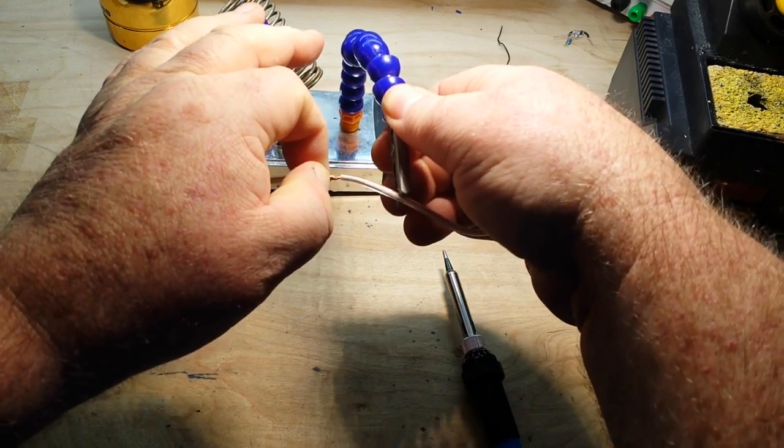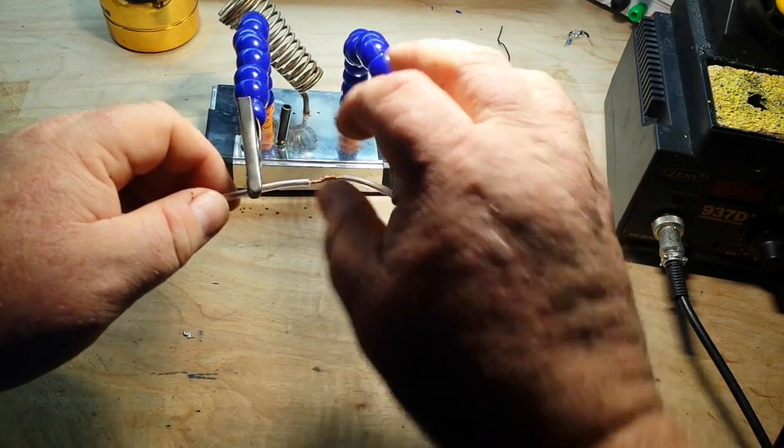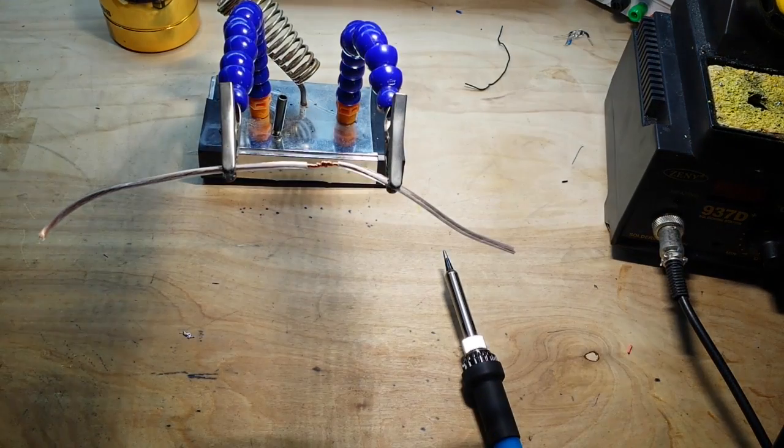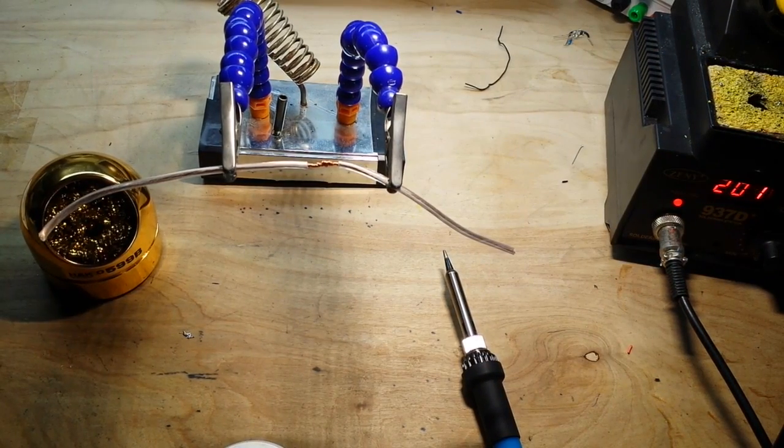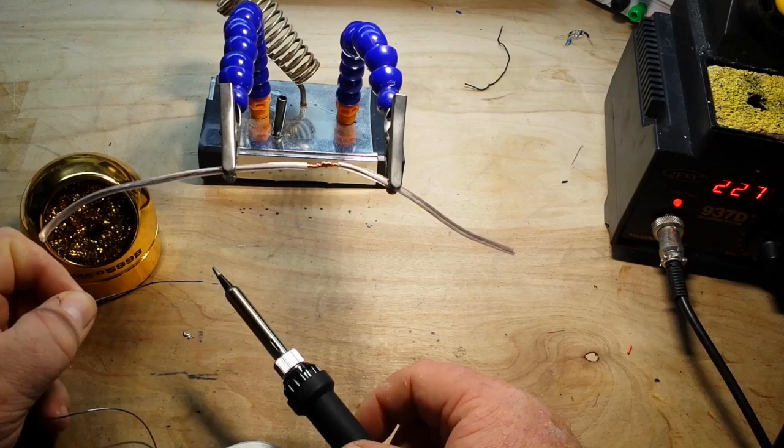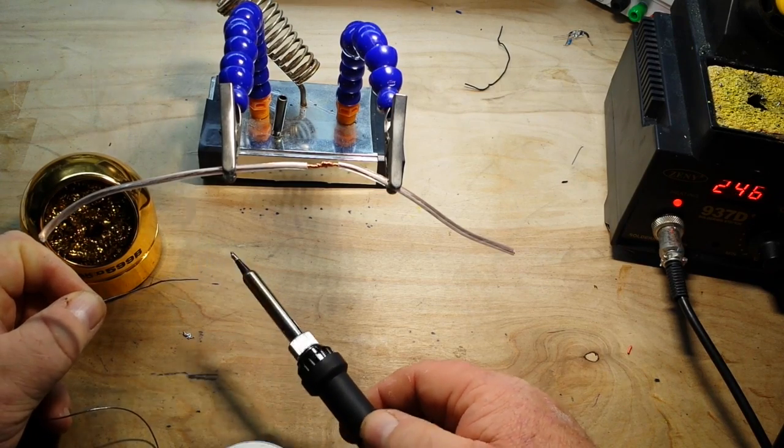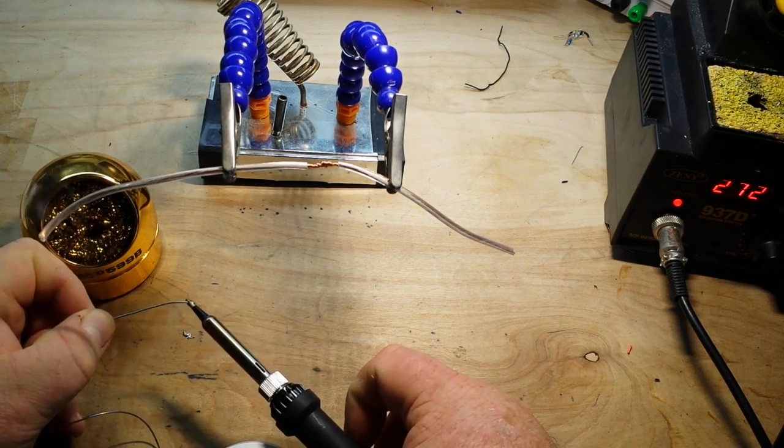Yeah, I know I'm not doing a Western Union or a NASA splice, just a quick splice. Alright, the first thing I'm going to do is I'm going to tin the iron, just like I would any other iron.